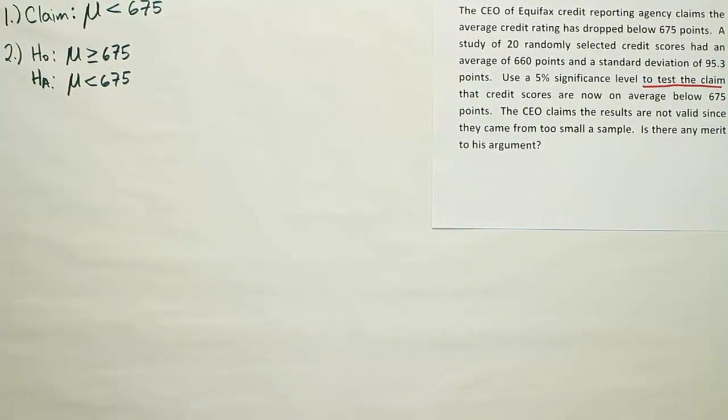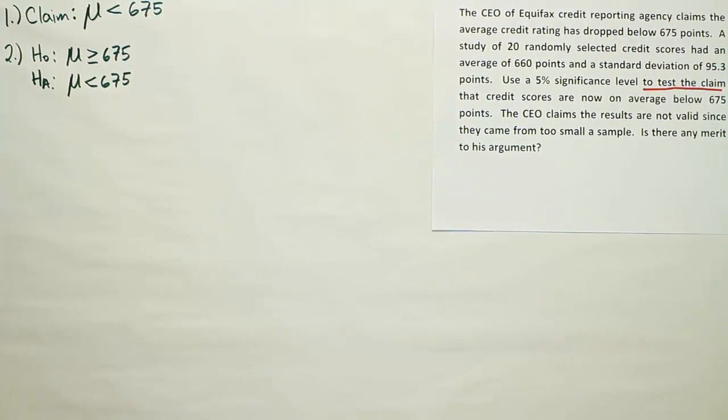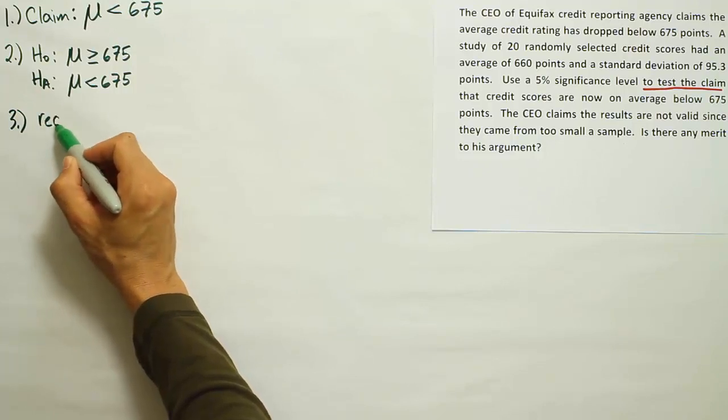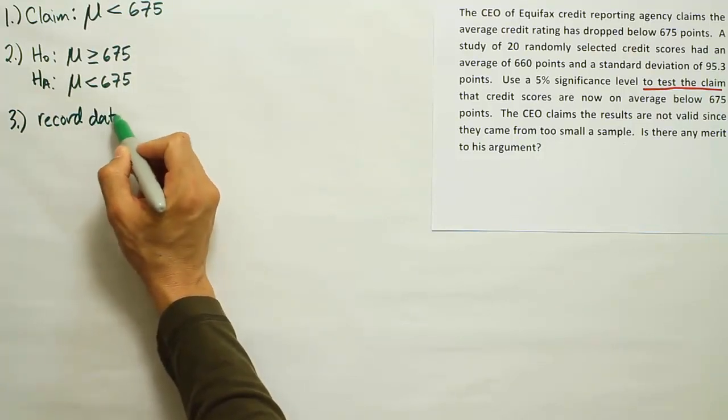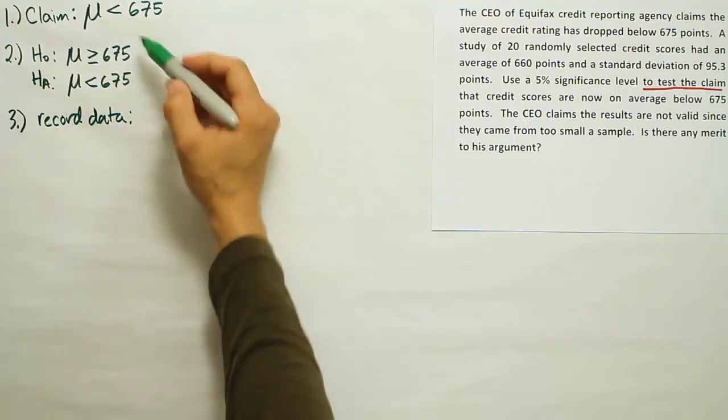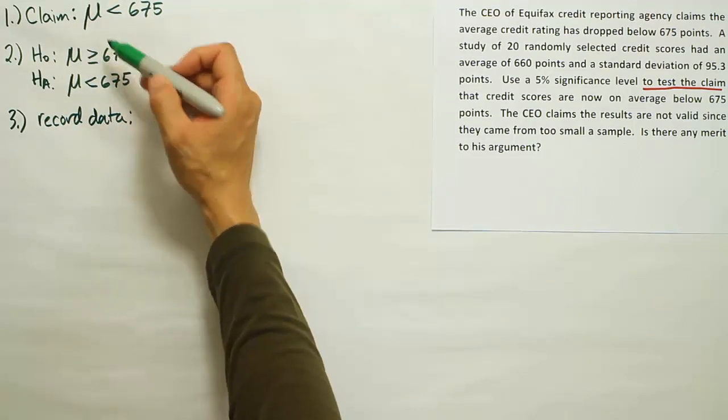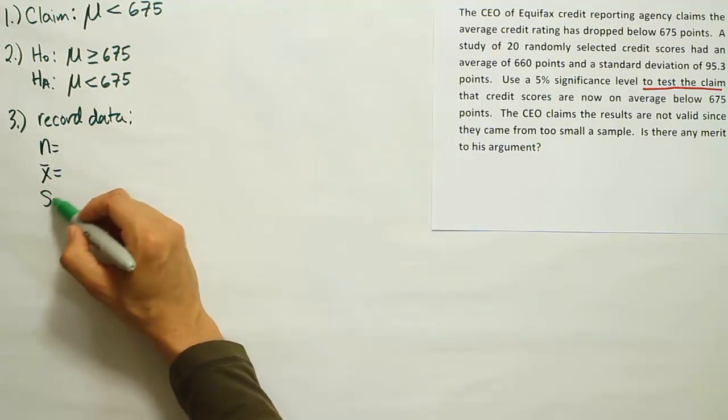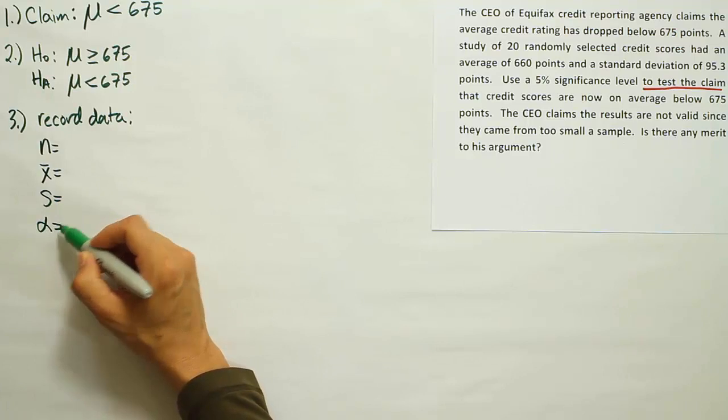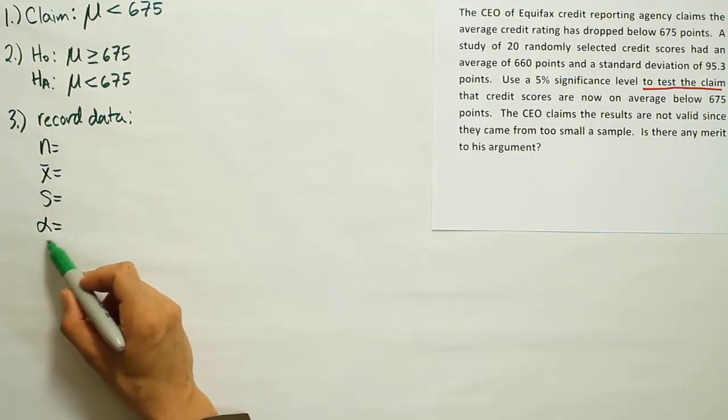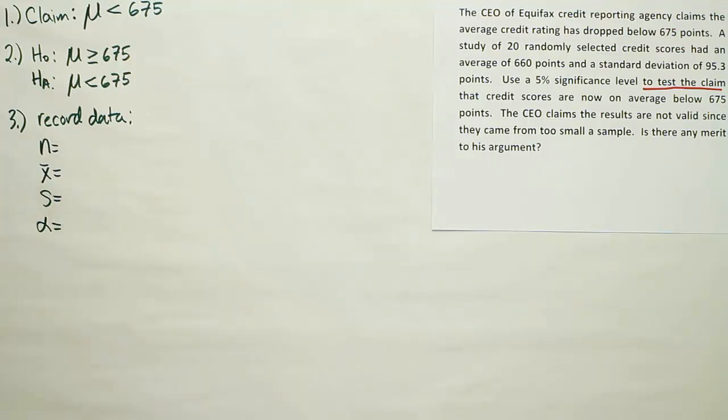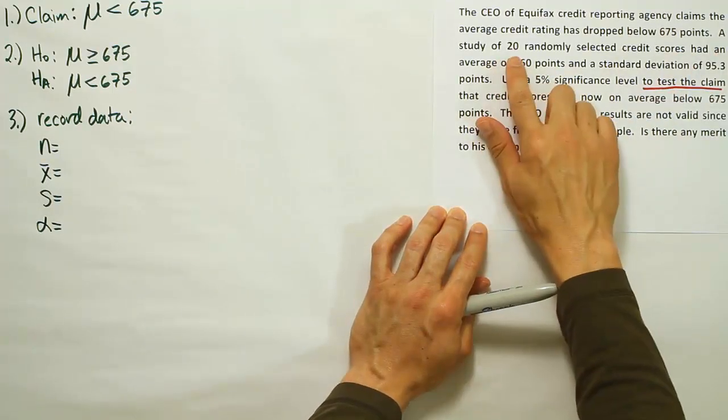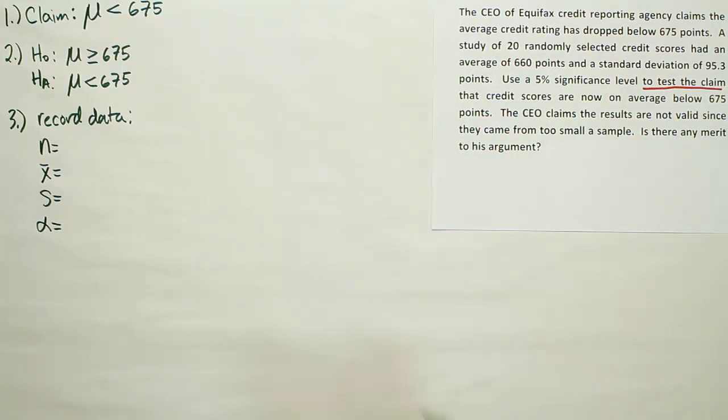So now we have the claim. We have our H0 and our HA. Our next step after that is to go ahead and list all the data from the problem so that we can plug that into our test stat next. For a hypothesis test about the mean, the data that we are usually given is N, X bar, an S value for standard deviation, and a significance level.